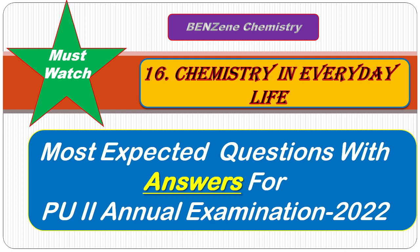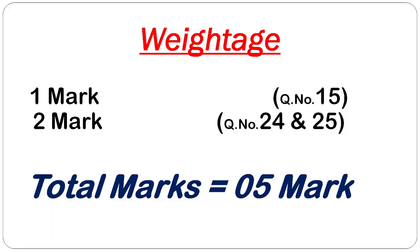This is a total 5-mark section. Your question paper will have total 5 marks — two 2-mark questions and one 1-mark question. The relevant question numbers are 15, 24, and 25.